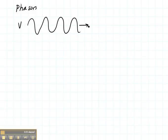So let's first consider phasors. If we have a simple sine wave, perhaps this is a voltage. This is a voltage that is propagating as a function of time.